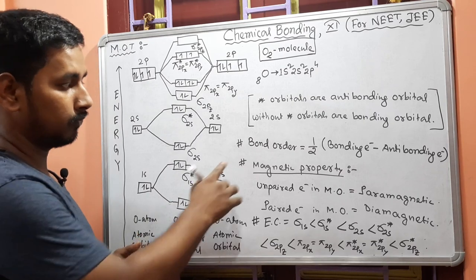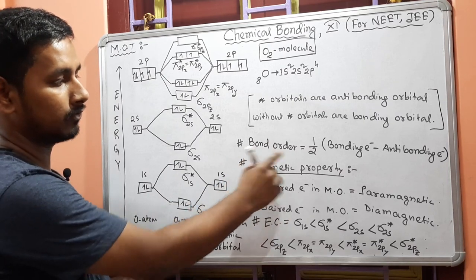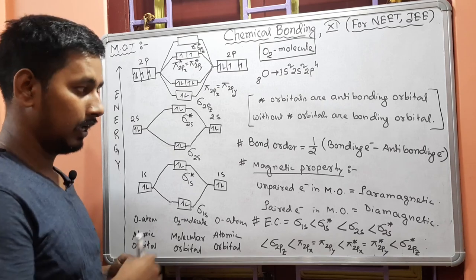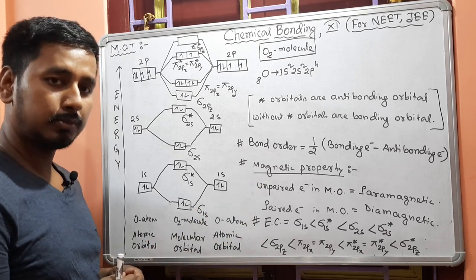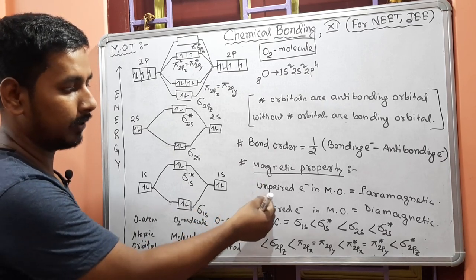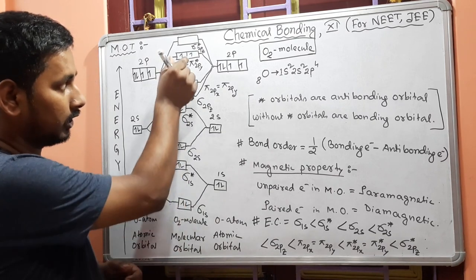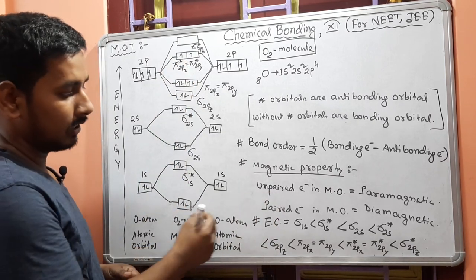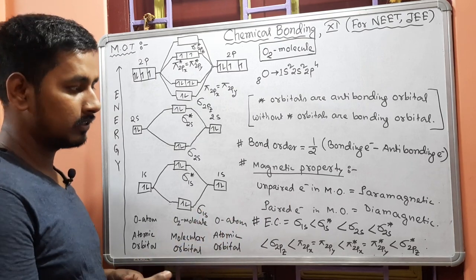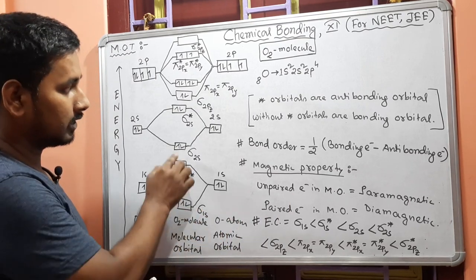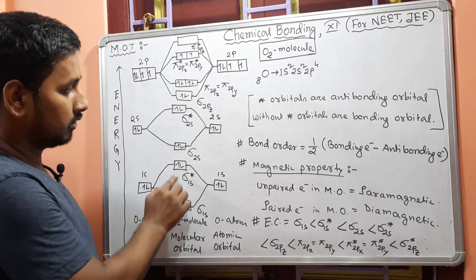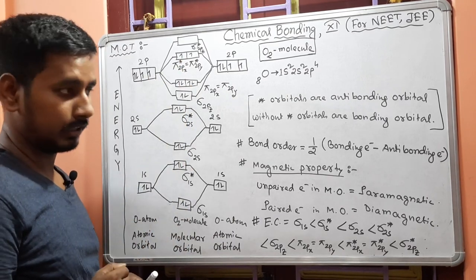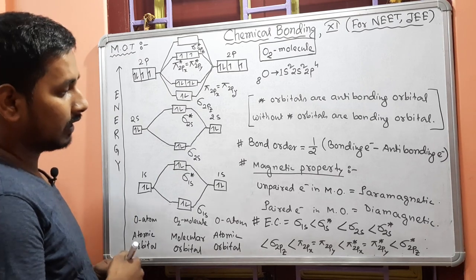To find the bond order, there is a formula: bond order equals half of (bonding electrons minus anti-bonding electrons). For magnetic property: if in the molecular orbitals there is an unpaired electron, then it is paramagnetic; if all electrons are paired, then it is diamagnetic. For oxygen molecule, there are two unpaired electrons, so it is paramagnetic in nature.